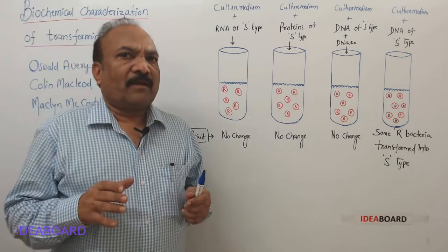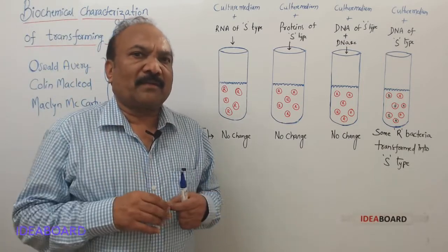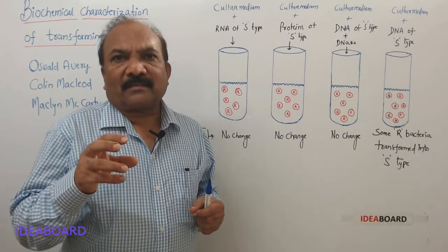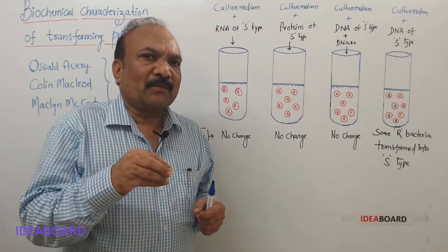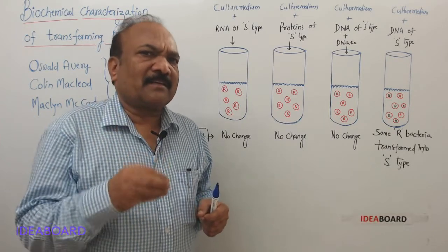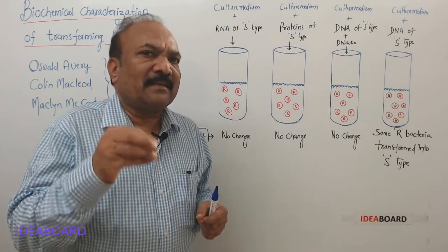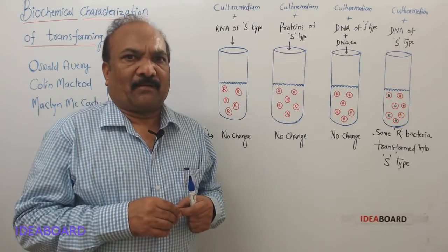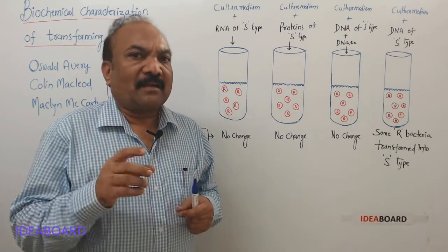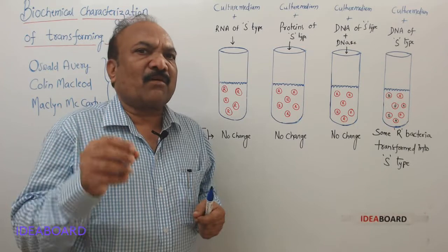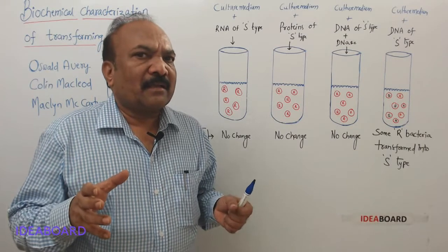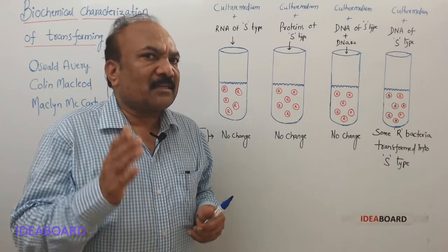In that experiment, we have come to know that these R cells are converted into S cells by taking some material from the heat-killed S cells. He called the phenomenon transformation, and he called the substance transforming principle.